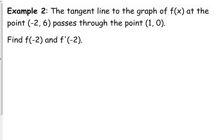This example says the tangent line to the graph of f of x at the point negative 2, 6 passes through the point 1, 0. And it asks us to find f of negative 2 and f prime of negative 2.